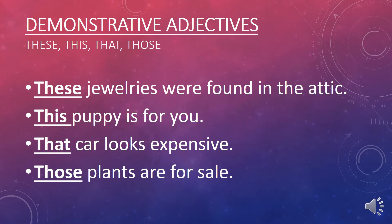Demonstrative adjectives are adjectives that point to something or someone in particular. These, this, that, and those are demonstrative adjectives. For example: These jewelries were found in the attic — here 'these' is followed by a noun, jewelry, so it functions as an adjective. But when we say 'these were found in the attic,' the word functions as a pronoun. Other examples: This puppy is for you. That car looks expensive. Those plants are for sale.